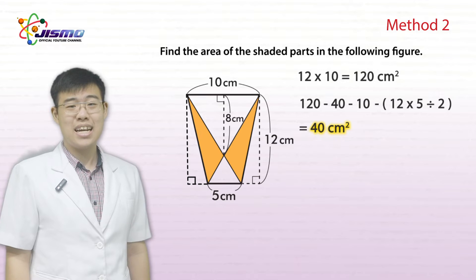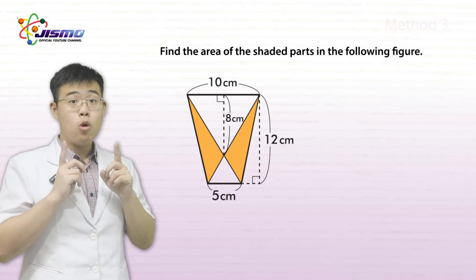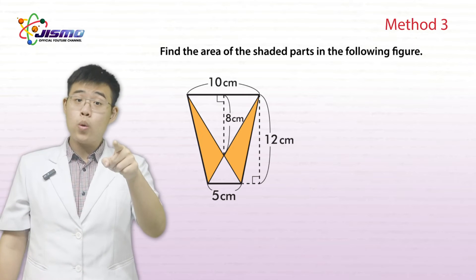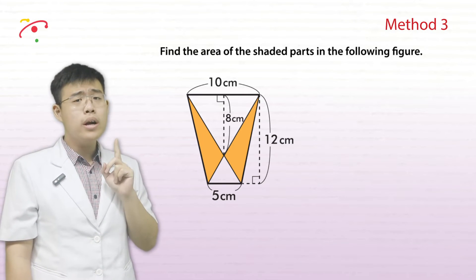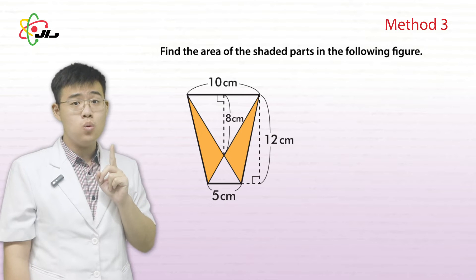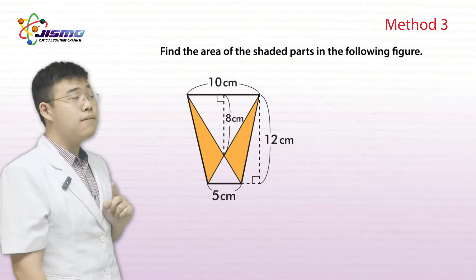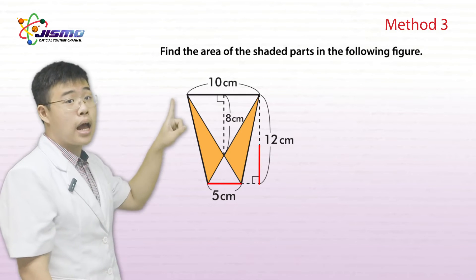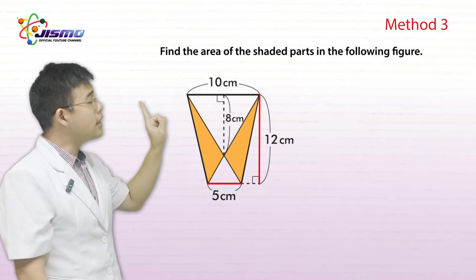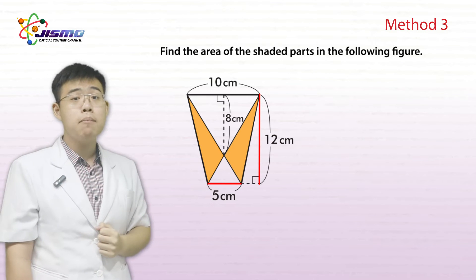Okay, Momo, do you understand now? Yes, but it is too long. Do you have a shorter way? Okay, Momo, good question. I will now show you a way that even lower graders can do. So in this method, you need to understand that if a triangle has the same base and height in any orientation, they will have the same area.